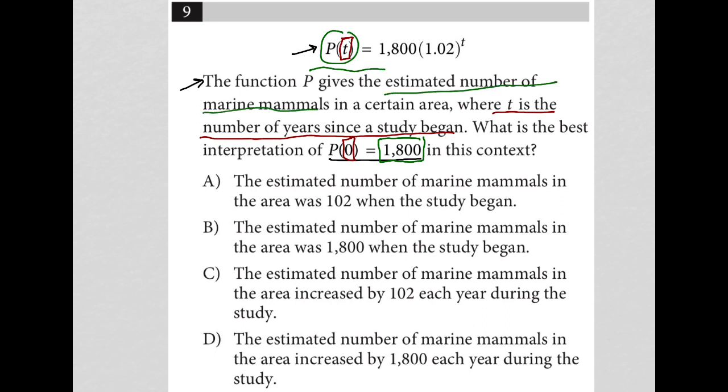So in essence, at the start of the study, there were 1800 marine mammals. So that's the interpretation. I like to take time just to make sure I understand what's going on before I read the answer choices, because sometimes the wording of the answer choices can be a little tricky or partially correct. So just taking that moment to make sure you understand is very helpful in choosing the correct answer.